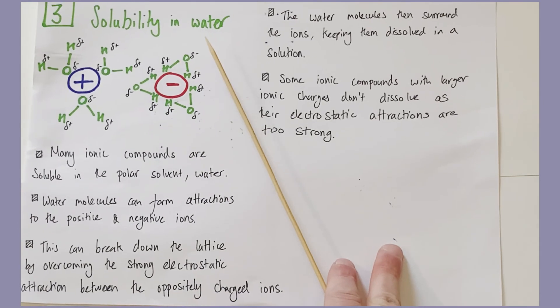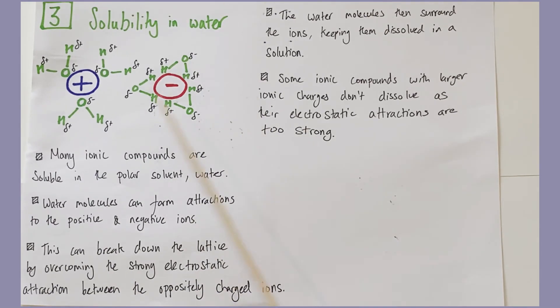And then the water molecules surround the ions, which causes them to be dissolved. So once they break down a giant ionic lattice, the water molecules surround the ions, preventing them from rejoining together through attractions, and therefore they stay dissolved. But it does depend on how strong the ionic interactions are.